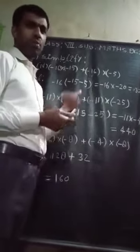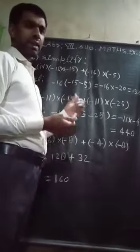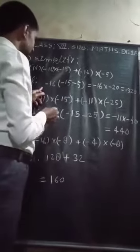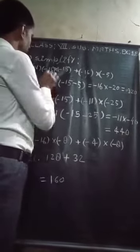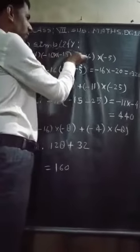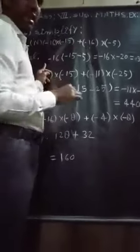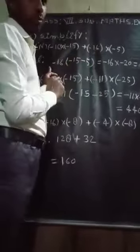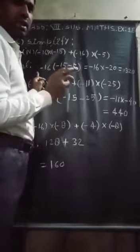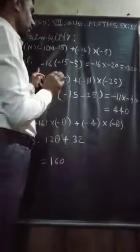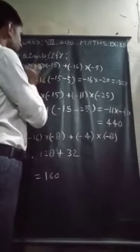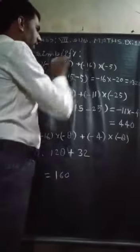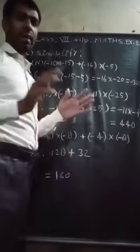But how will it be solved? Let us see in the solution form. In the solution section, minus 16 and minus 16 come twice in the numerical problem. So, minus 16 will be common, and minus 15 and minus 5 will be added.